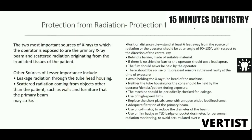Protection for the operator: leakage radiation comes through the tube head housing and scattered radiation comes from irradiated objects. Using the position-distance rule, stand six feet away from the source of radiation. Stand behind a barrier; if there is no shield, use a lead apron. The film should never be held by the operator. Do not use fluorescent mirrors in the oral cavity while taking radiographs. Avoid holding the tube head — neither the tube housing nor the cone should be held by the operator. The machine should be periodically checked. Use high-speed films, replace the plastic cone with an open-ended lead-lined cone, and use added filtration, a collimator, and a TLD badge to monitor radiation exposure.